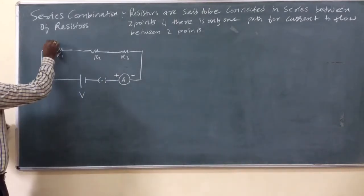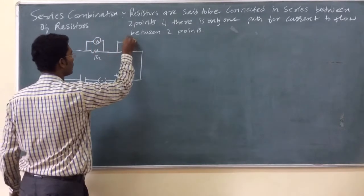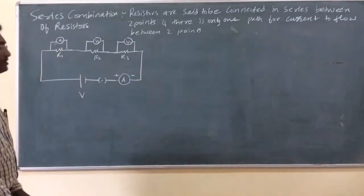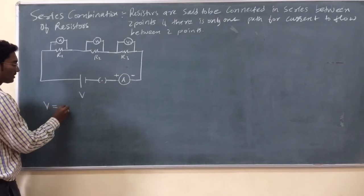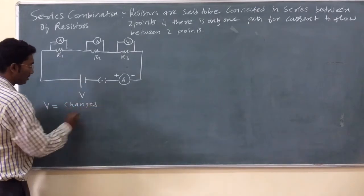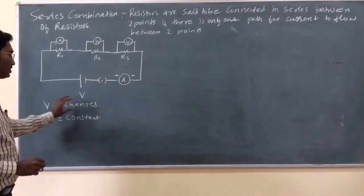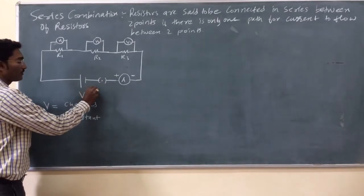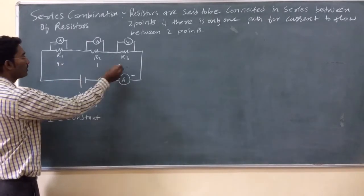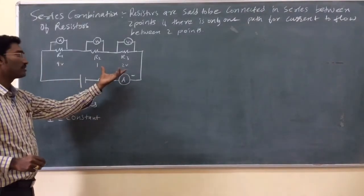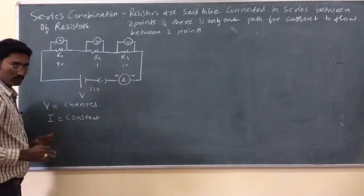We can find out the potential difference across each resistor in the series arrangement using three voltmeters. It is found that the voltage gets divided amongst these resistors. So in the series arrangement, voltage changes and current flowing through the series arrangement remains constant. For example, if the potential difference of this battery is 12 volts, then this can be 9 volts, this can be 1 volt, this can be 2 volts.